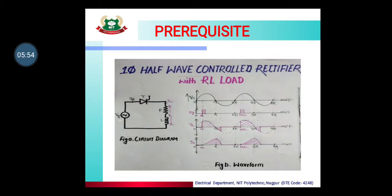As a prerequisite, in the previous lecture we studied about the single phase half wave controlled rectifier with inductive load. In that circuit, whenever the positive half cycle comes, the upper terminal of the supply becomes positive, so our SCR becomes forward biased. But it does not turn on until we give it a gate pulse.